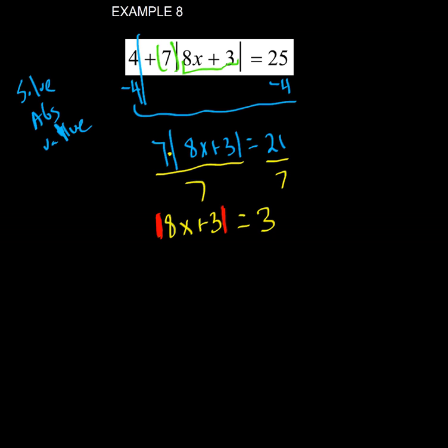Now we split it into two separate equations: 8x plus 3 equals 3, and 8x plus 3 equals negative 3.